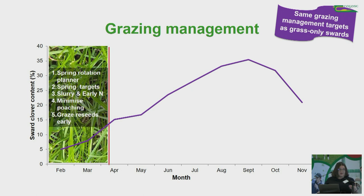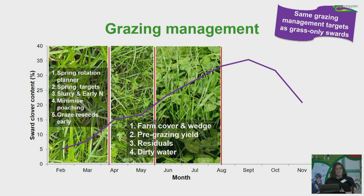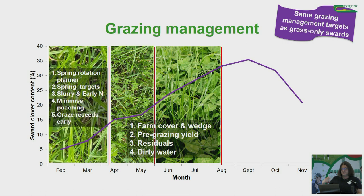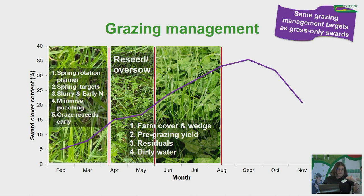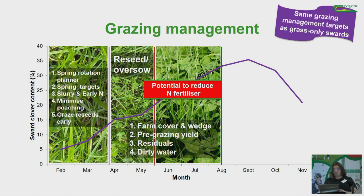In mid-season, April to mid-August: manage swards weekly, sometimes more frequently during fast growth. Use your wedge to identify surpluses and deficits. Manage pre-grazing yields between 1,300–1,500 kilos of dry matter per hectare, graze residuals down to 4 centimetres, and make use of dirty water as it supplies some nitrogen, P and K. April and May is also the time to take the opportunity to reseed and oversow. From May to about August, this is the key period for reducing fertilizer application on grass-clover swards.